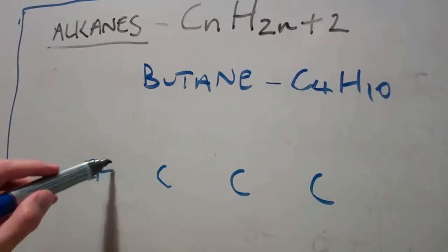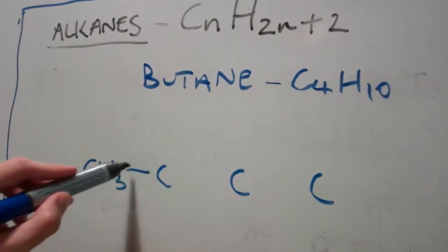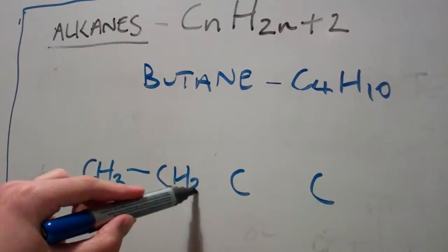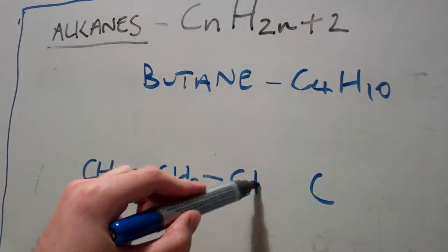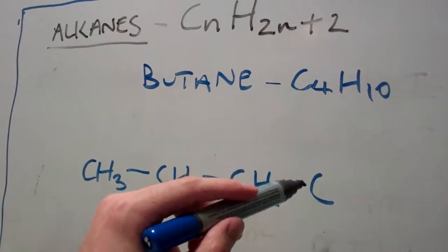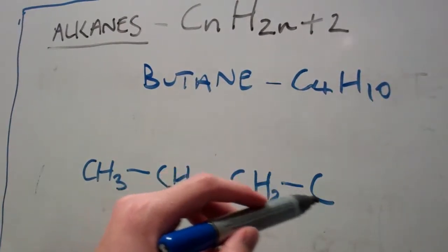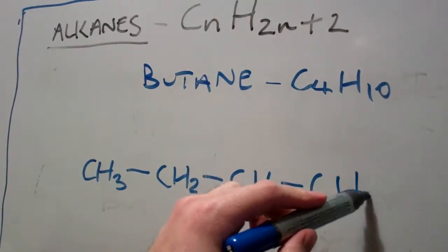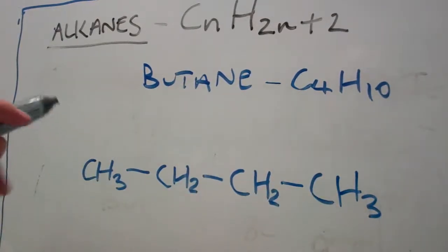Now the carbons on the end have three hydrogens and the carbons in the middle have two hydrogens because they already have two bonds attaching them to the carbon on either side. So that is what butane would look like.